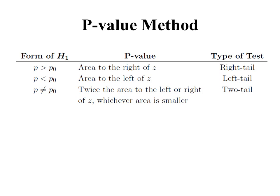Exactly how we calculate the p-value depends on the form of the alternative hypothesis. If we have p greater than a number, the p-value is the area underneath the standard normal bell curve to the right of z — this is called a right-tailed test. If the alternative hypothesis is p less than a number, the p-value is the area to the left of z, the test statistic — this is a left-tailed test. If the alternative hypothesis is p not equal to some number, the p-value is twice the area to the left or right of z, whichever is smaller — this is called a two-tailed test.